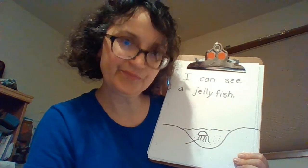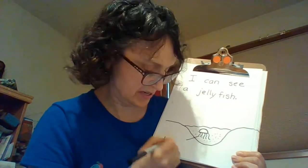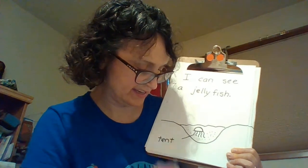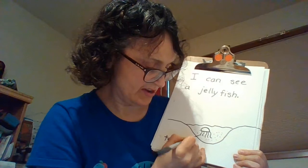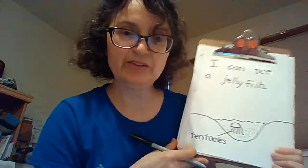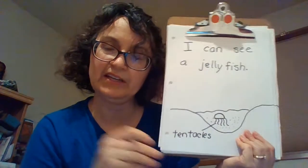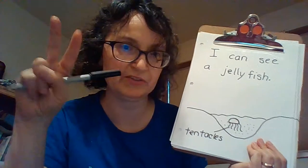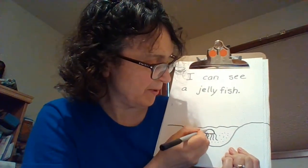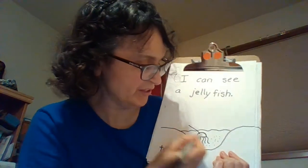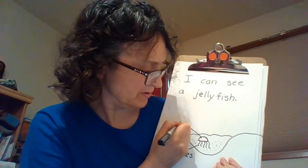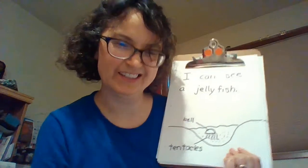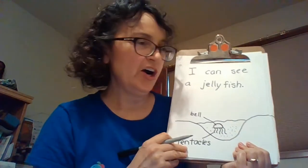You can label it — do you remember what these pieces coming out are called? Tentacles! T-E-N-T-A-C-L-E-S. When we studied snails, their eyes are on the ends of tentacles too. This part of the jellyfish is called the bell, and under the bell there would be the mouth — you can't see it in my picture.